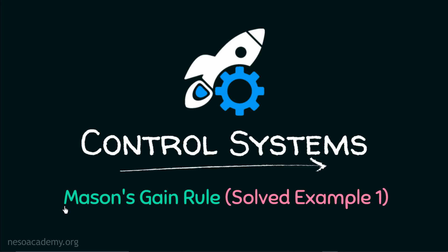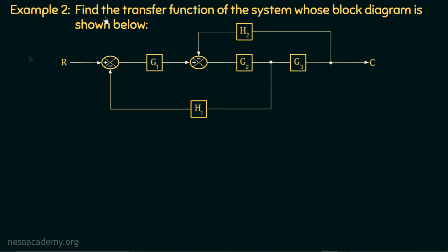In this presentation, we are going to discuss one example based on Mason's gain rule. The problem is to find the transfer function of the system whose block diagram is shown below. One block diagram is given to us and we need to find out the transfer function.